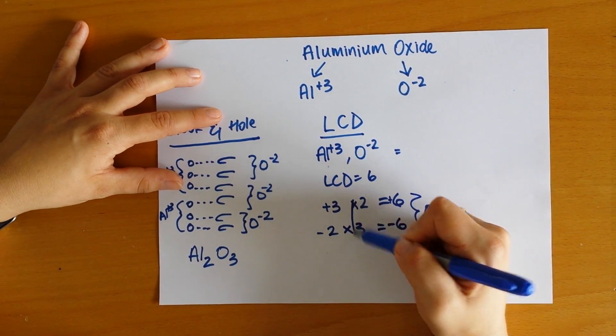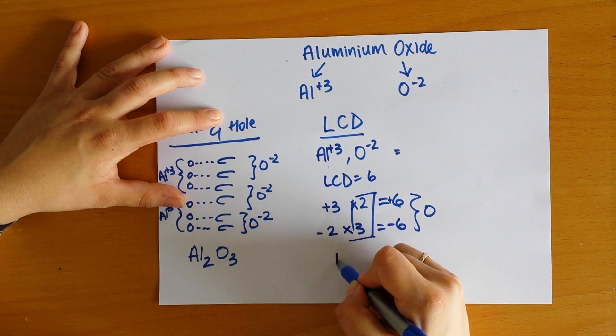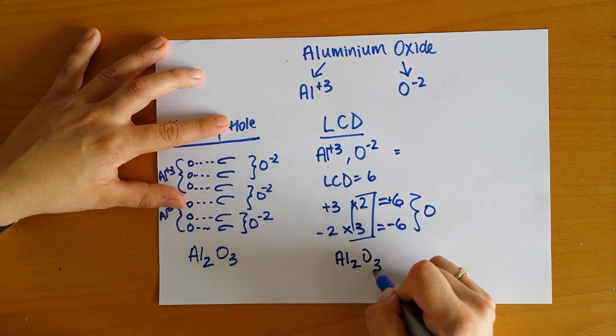So you just take these factors here and that gives you the ratio of atoms. So we've got aluminum two O three.